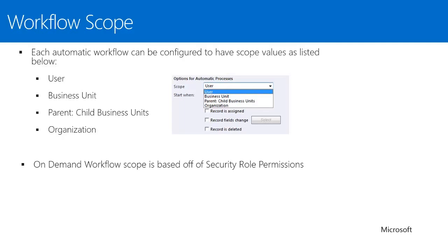For on-demand workflows, scope works differently — it's based on the security role permissions the user has. The workflow scope is directly related to the current user's workflow read rights. If set to organization, the workflow is selectable in the run workflow option for all users with organizational read rights to the workflow permission. If set to business unit scope, it's selectable only if the workflow is owned by someone in your business unit. If set to user scope, only the owner of that workflow can see and run it on-demand.